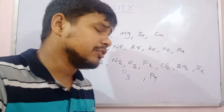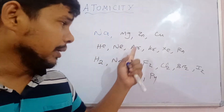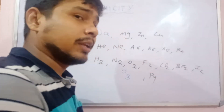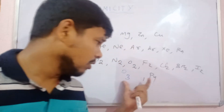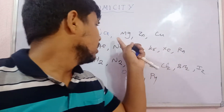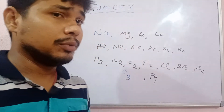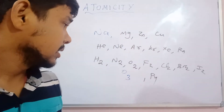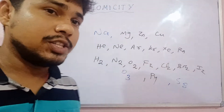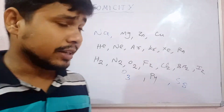So likewise we can differentiate different types of atomicity: monoatomic, diatomic, triatomic, tetraatomic. These are all polyatomic, we can say. Besides, except monoatomic and diatomic, all others are polyatomic. Sulphur is octatomic. These are the different atomicities of different elements.